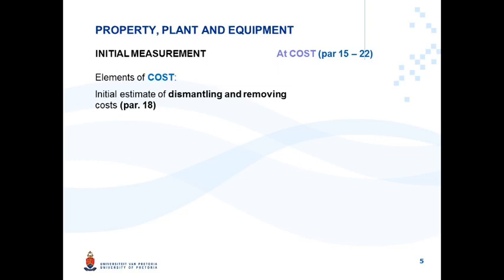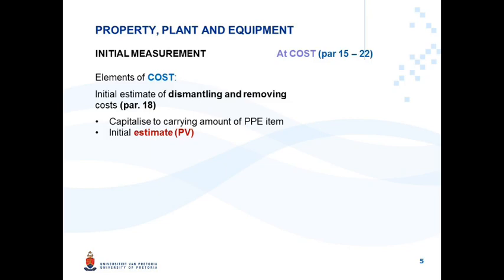Let's look at the accounting treatment of this situation. The entity needs to capitalize to the carrying amount of this PPE item — the mine — an initial estimate of these costs. These costs will only be incurred at the end of the asset's useful life, therefore you can only estimate them at this point in time. You also have to calculate the present value of those costs, and that present value will be the amount you capitalize to the PPE item.